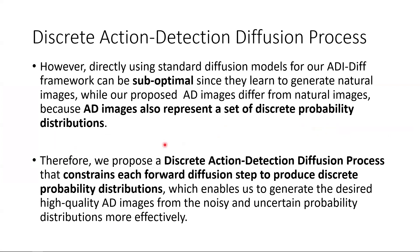However, directly using standard diffusion models for our ADIDIF framework can be suboptimal, since they learn to generate natural images, while our proposed AD images differ from natural images because AD images also represent a set of discrete probability distributions. Therefore, we propose a discrete action detection diffusion process that constrains each forward diffusion step to produce discrete probability distributions, enabling us to generate the desired high-quality AD images from noisy and uncertain probability distributions more effectively.